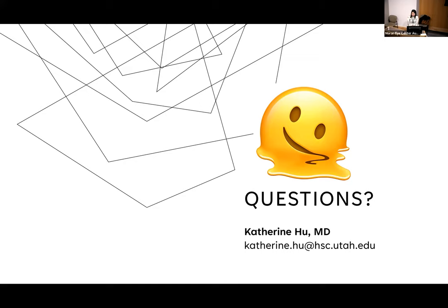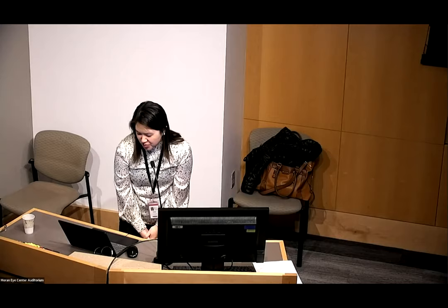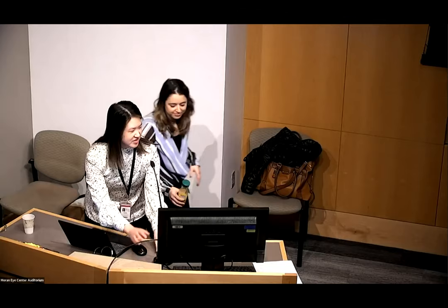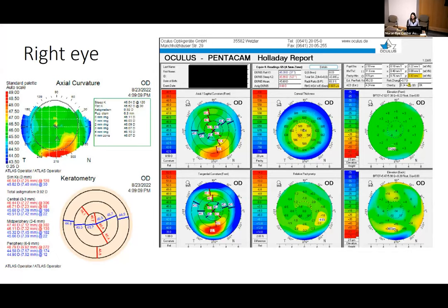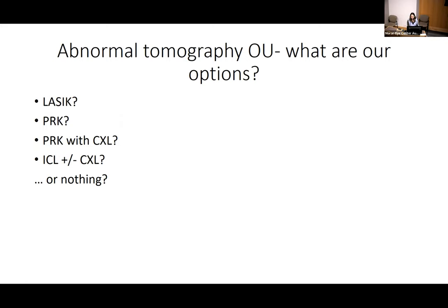We'll now move on to Dr. Kerschenbaum. There's a comment from Dr. Larochelle about patients with multiple enhancements and how to interpret their K values — we'll address that. Looking at this patient's topography: inferior steepening in the right eye and even more in the left eye. With this abnormal tomography in both eyes, what are our options? This is not an exhaustive list, but these are the ones we basically considered when deciding how to approach this case.